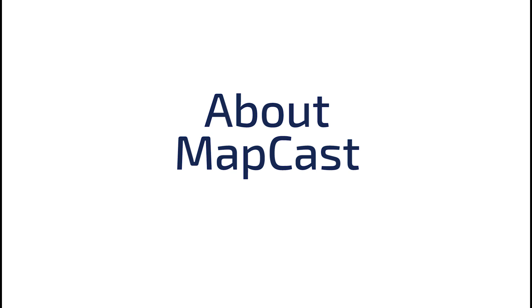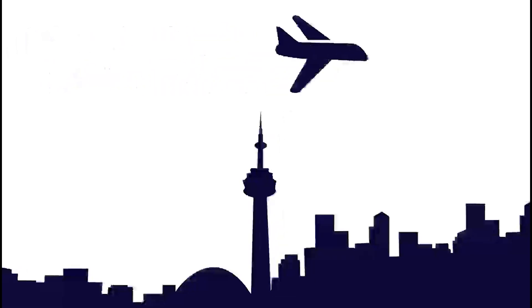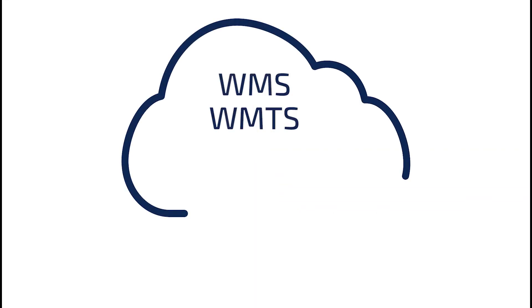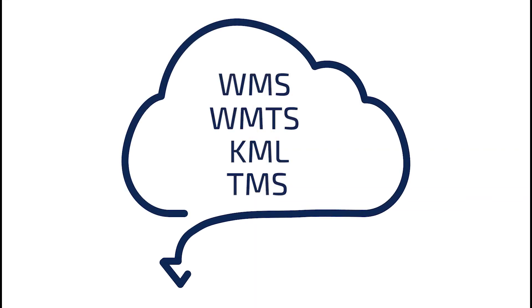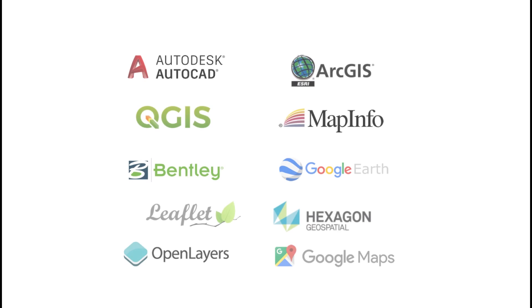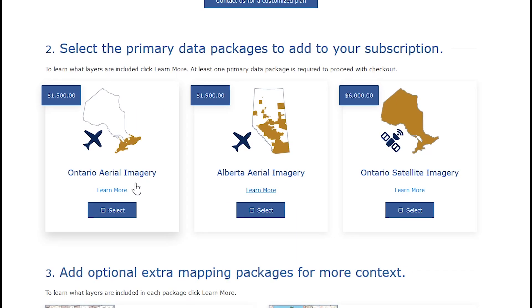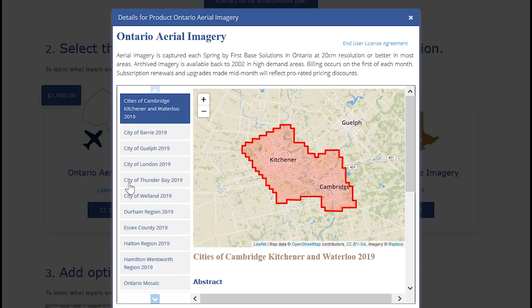About Mapcast: over the last 10 years, Mapcast has been the preferred web map service for Ontario industries, delivering aerial imagery and elevation mapping from our servers directly to your desktop. Mapcast lets land information professionals access a vast collection of aerial imagery and vector mapping through an online connection.